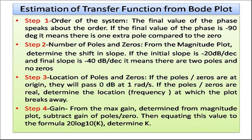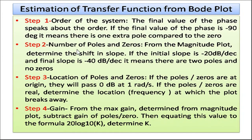The first step in estimating the transfer function from the Bode plot is to know the order of the system. The final value of the phase indicates the order. If the final value of the phase is minus 90 degrees, it means there is one extra pole compared to the zeros, because for every pole there is a minus 90 degree phase contribution. If there is one pole and one zero, the final angle will be zero.